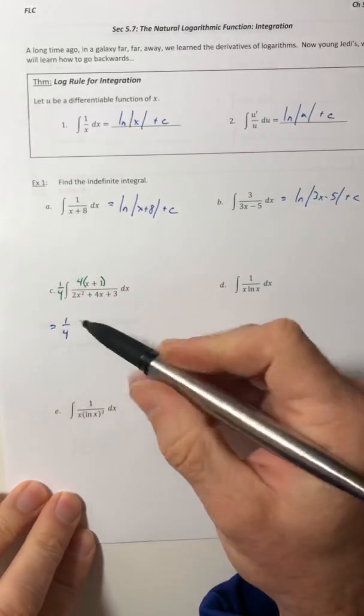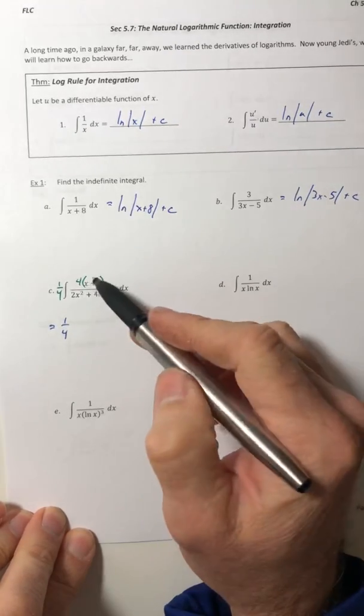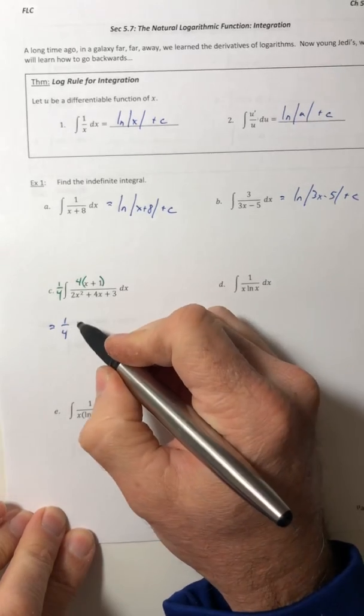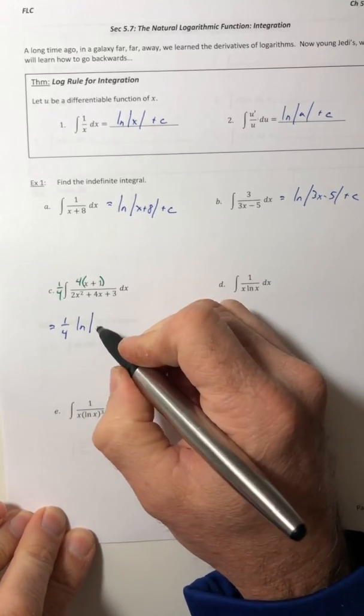So the 1 fourth I put on the outside stays, and now I have the correct format. I have u prime over u, so it's going to be ln of the absolute value of that denominator.